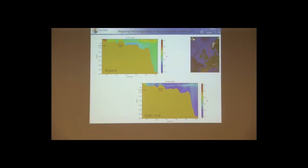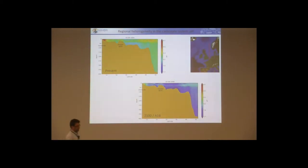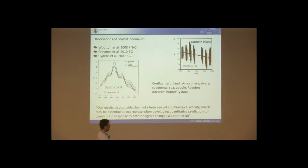This is the same information on a transect running south to north up the North Sea — present day and future pH — going through annual cycles from the end of last century to the end of this century. You can see how pH is associated with where biological production is and affected by mixing at different places and times. There are lots of observations of coastal anomalies. Tim Wooten's paper on Tatoush Island shows a swift decrease in pH over recent years, and the dataset off the Dutch coast written up by Provost et al. also shows very interesting and extreme trends in pH.